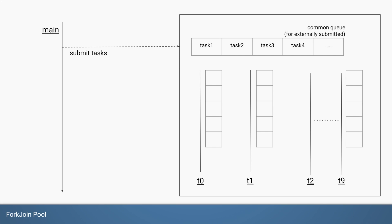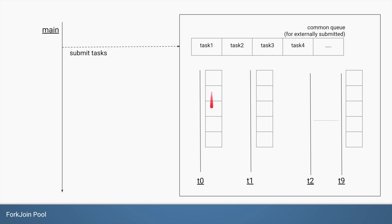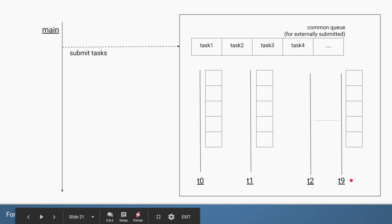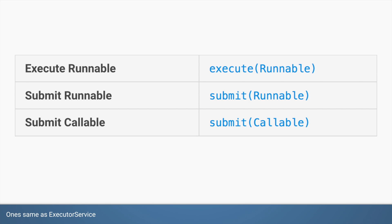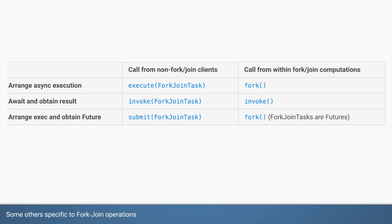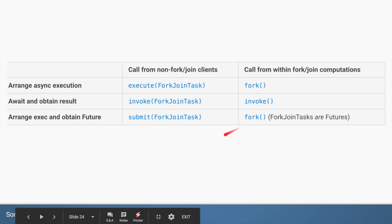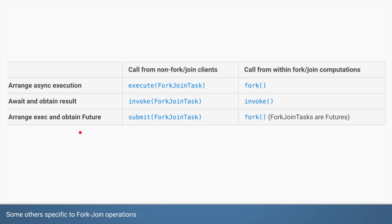To summarize: fork join pool works exactly like executor service, but internally each thread uses a double-ended queue to store all the subtasks it creates. All subtasks thread zero produces are stored in its own queue, all of thread one's in its own, and so on. Since it's very similar to executor service, you can still run runnables and callables the same way. If you want to work with ForkJoinTask specifically, you use special methods — execute, invoke, or submit — depending on what you're trying to achieve.